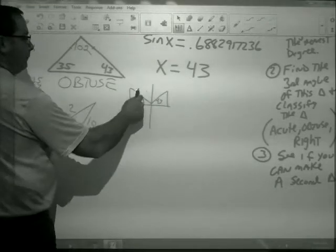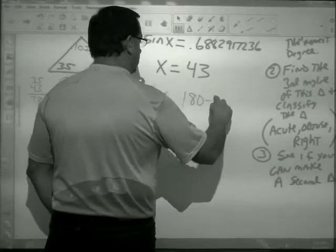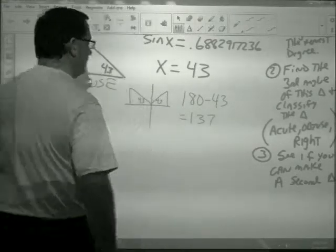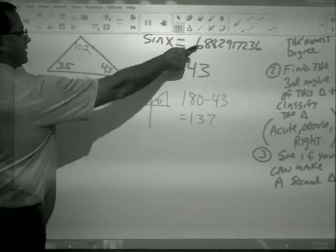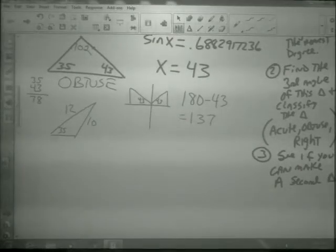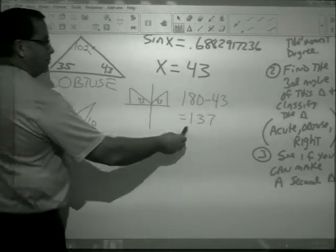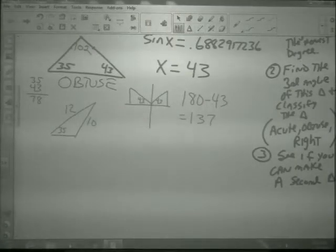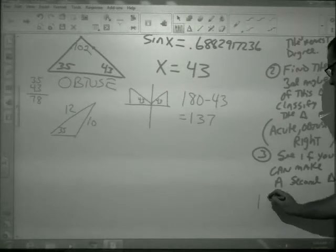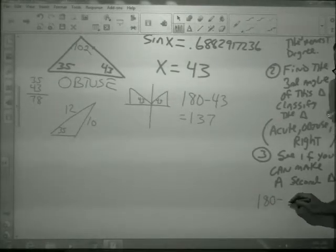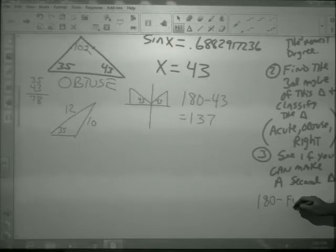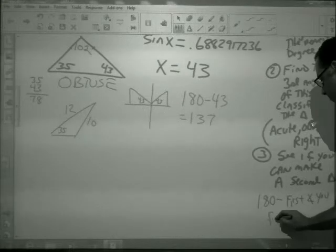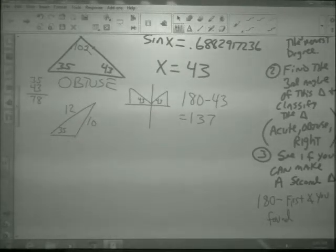180 minus 43 is 137. If I took the sine of 137, I would get the same exact answer. My question is, could this be the second angle? See if we can make a second triangle. What do we need to do? You do 180 minus the first angle you found. And then you have to see if it works.